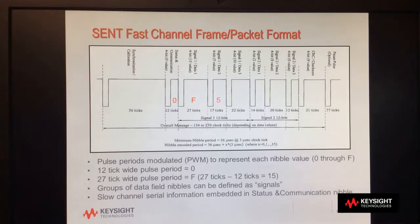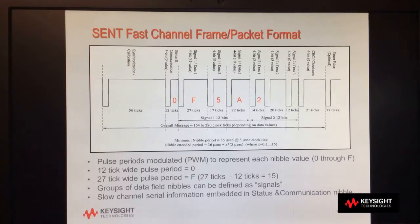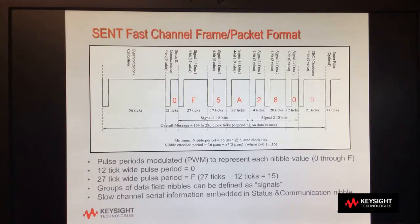For the rest of the nibbles shown in this example: 17-ticks represents 5, 22-ticks translates into A, 14-ticks translates into 2, 20-ticks translates into 8, 12-ticks into 0, and 21-ticks into 9, which in this example is our CRC nibble.